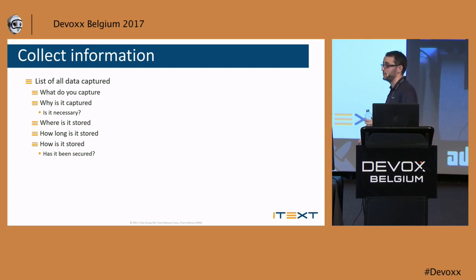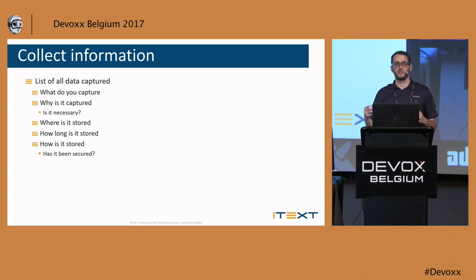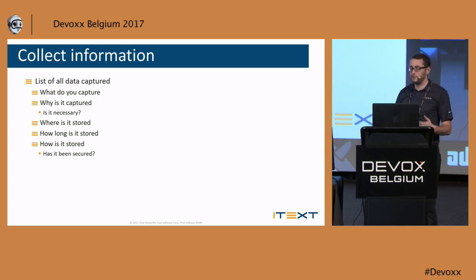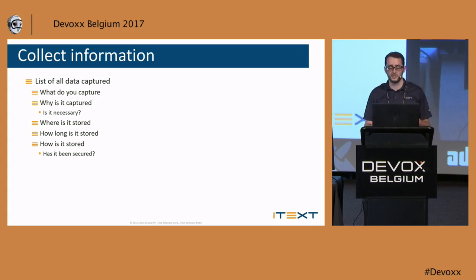The next step is to list everything you collect on anyone — every database, every cookie, everything. What do you capture? Why do you capture it? Is it really necessary? Where is it stored, how is it stored, what security are you using, how long is it stored, can people delete or access their data? It's a very arduous task with a lot of effort, but you'll find a lot of things you hadn't thought of before — like the git repo issue I only recently thought of. This also includes HR stuff.